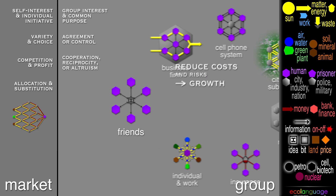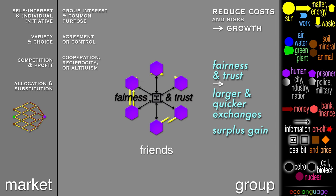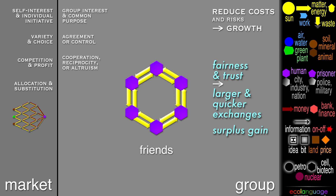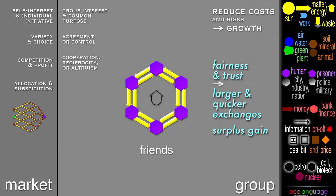Let's demonstrate briefly. A new group of friends start to relate to each other and develop fairness and trust, and this helps them to make larger and quicker exchanges. If we put their sharing at the original size, we see that there is a surplus gain, which may be collected, maybe to have a celebration, or else remain distributed.